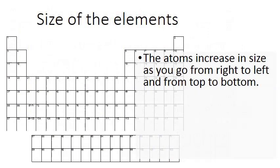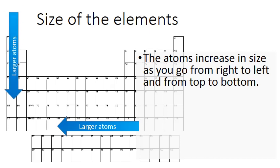Now, if we look at the size of the elements on the periodic table, you'll see that there is a very specific pattern that emerges as well. The atoms increase in size as you go from the right to the left and from the top to the bottom. So as you go right to left, the atoms get bigger. And as you go from top to bottom, the atoms get bigger, which means the largest atom would be number 87, that would be francium.